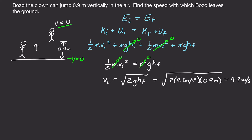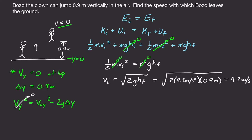Now really quickly, I'd like to show that we get the same thing from kinematics. We know our velocity in the y direction at the top is zero, and our delta y is 0.9 meters. Using the kinematic equation that doesn't include time, and solving for V naught y, we get the square root of 2g delta y — the exact same expression. With conservation of energy, we just call delta y our height. The reason we use conservation of energy is that it gives the same answer but is much easier in many cases than kinematics or Newton's laws.